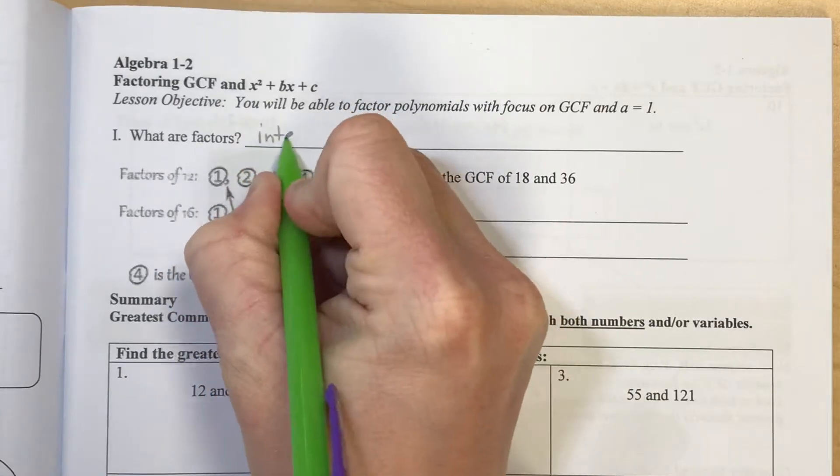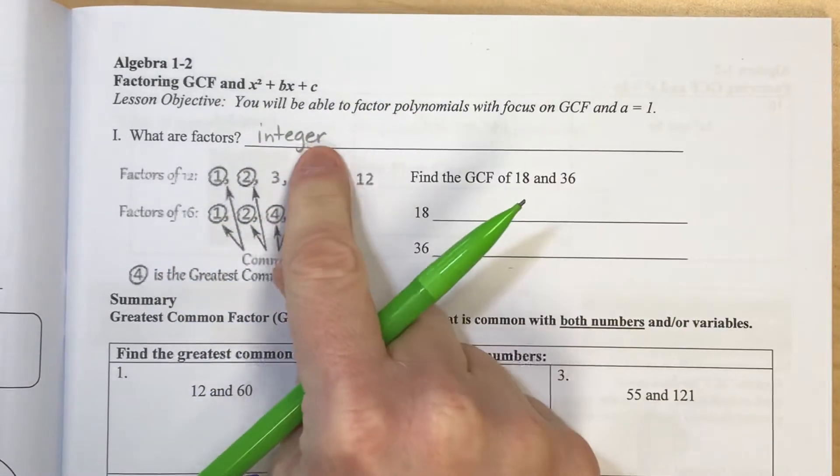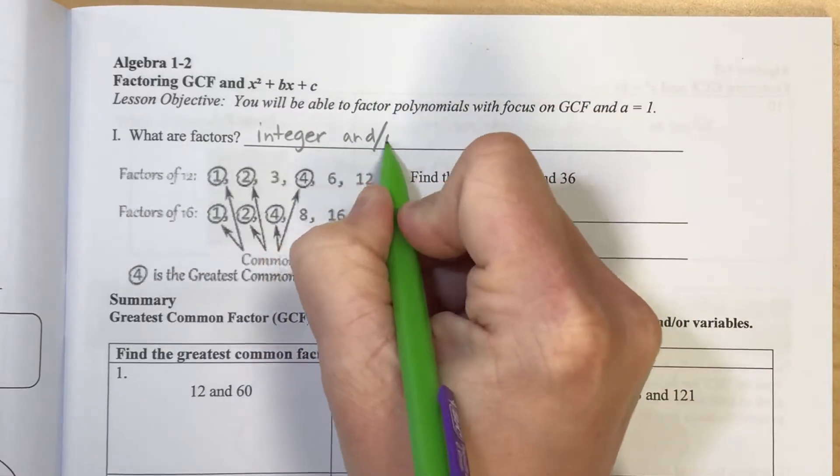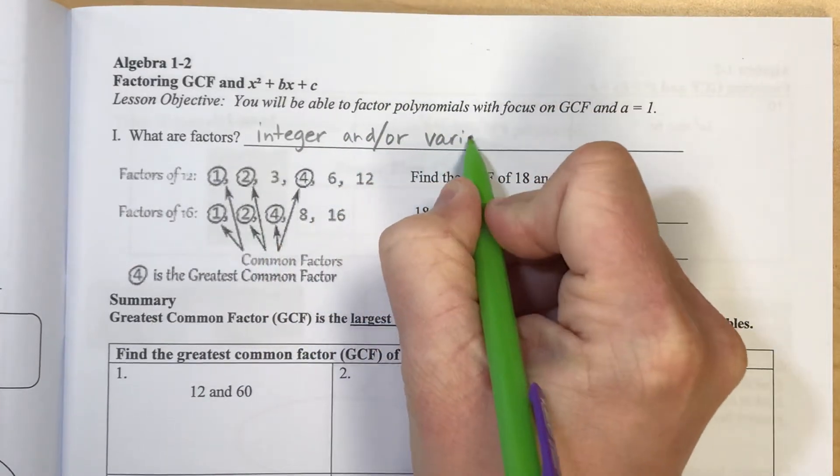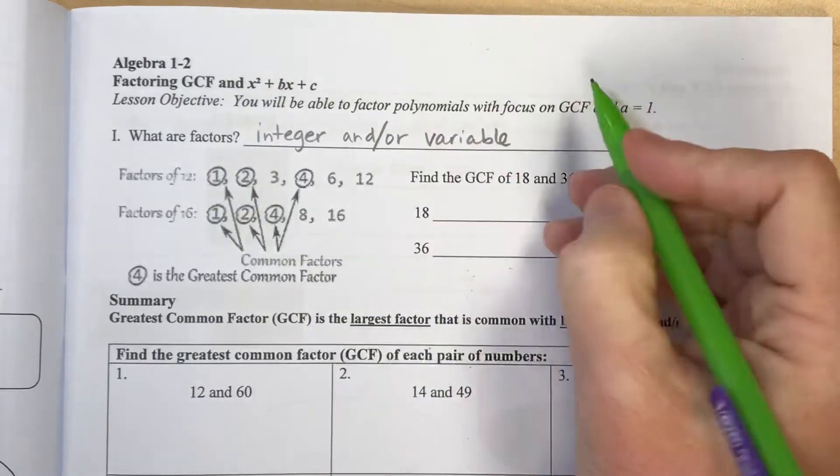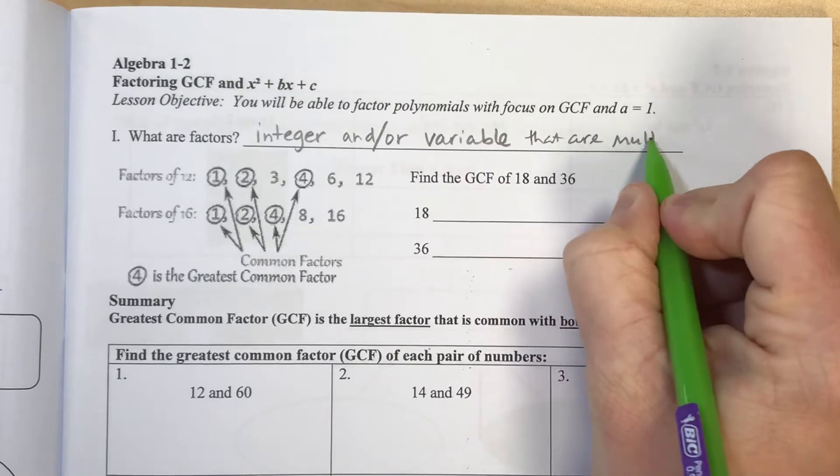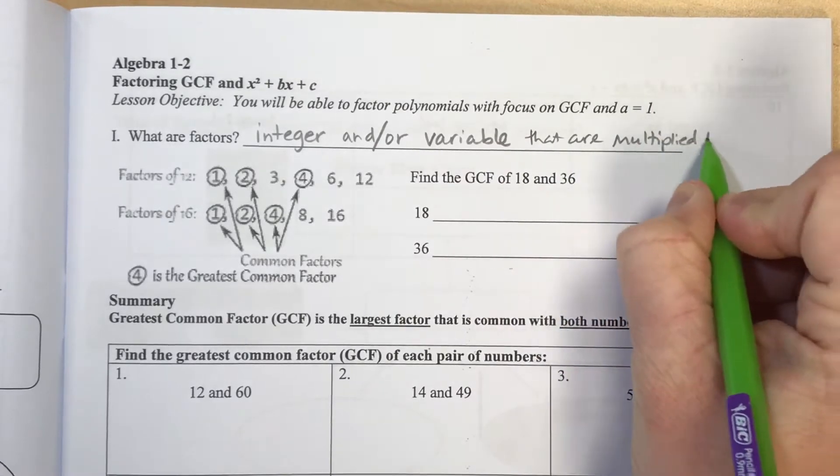Well, factors would be an integer, and an integer is a number that is either positive or negative, and or a variable, meaning a letter of your problem, that are multiplied to a product.